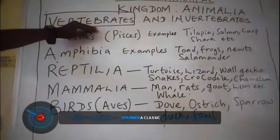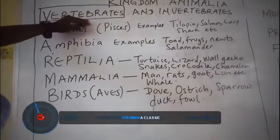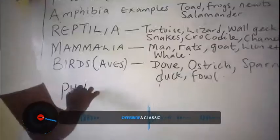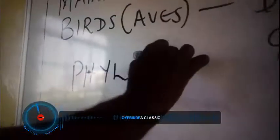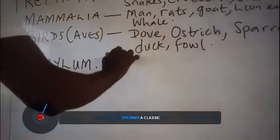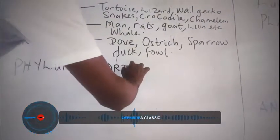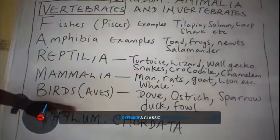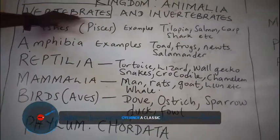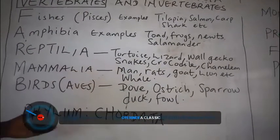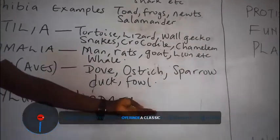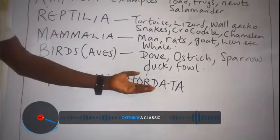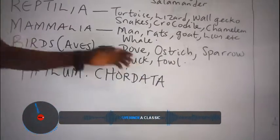Under the vertebrates, we have a general phylum for all vertebrates called Chordata. So if you are given any vertebrates — vertebrates are animals with the backbone — the phylum is called Chordata. Because they have a backbone, they have a notochord, they have a cord.